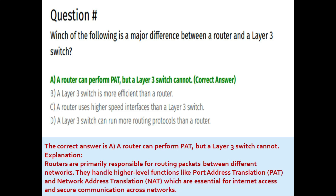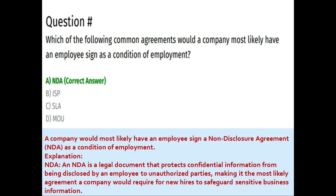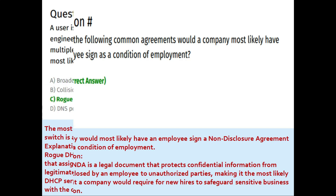Next question: which of the following common agreements would a company most likely have an employee sign as a condition of employment? Option A: NDA, Option B: ISP, Option C: SLA, Option D: MOU. The correct answer is option A: NDA. An NDA is a legal document that protects confidential information from being disclosed to unauthorized parties, making it the most likely agreement a company would require for new hires to safeguard sensitive business information.